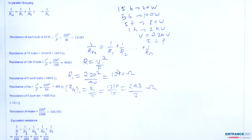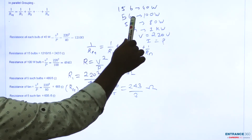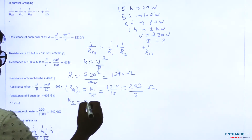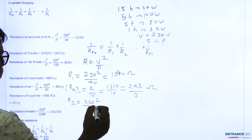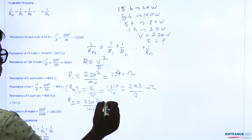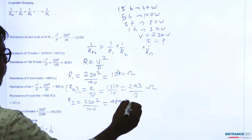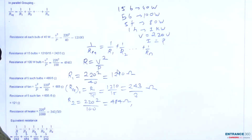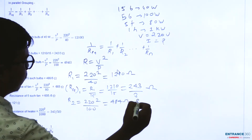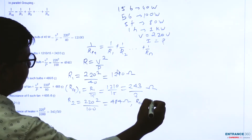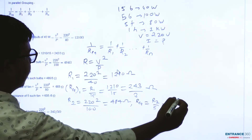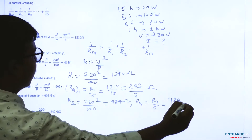Similarly, for the 100W bulbs: R2 = (220)²/100 = 484 ohm. Since 5 such bulbs are connected in parallel, R_eq2 = 484/5 ohm.